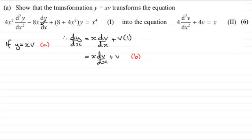Next, I need to find d2y by dx squared, and I can do that by differentiating this with respect to x. So if I differentiate dy by dx with respect to x, we get d2y by dx squared. And then for this term here, I'm going to need to use the product rule.